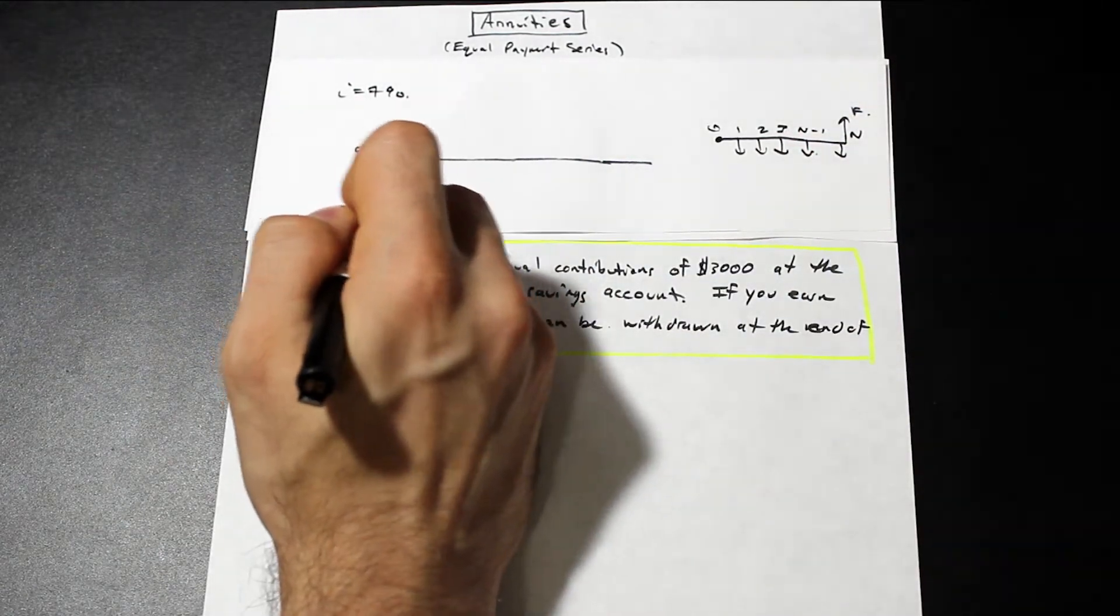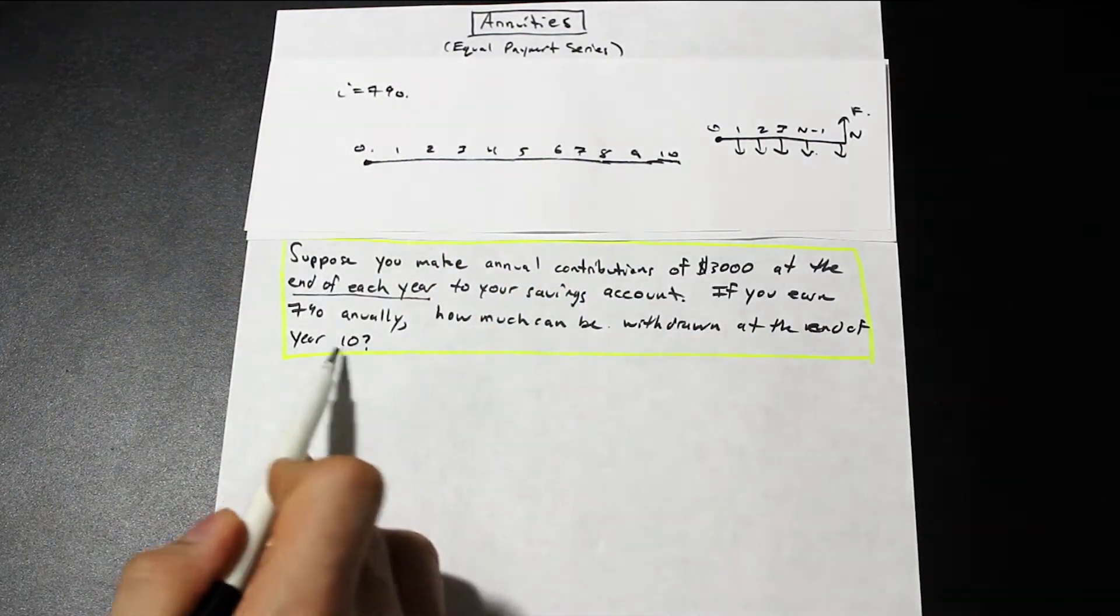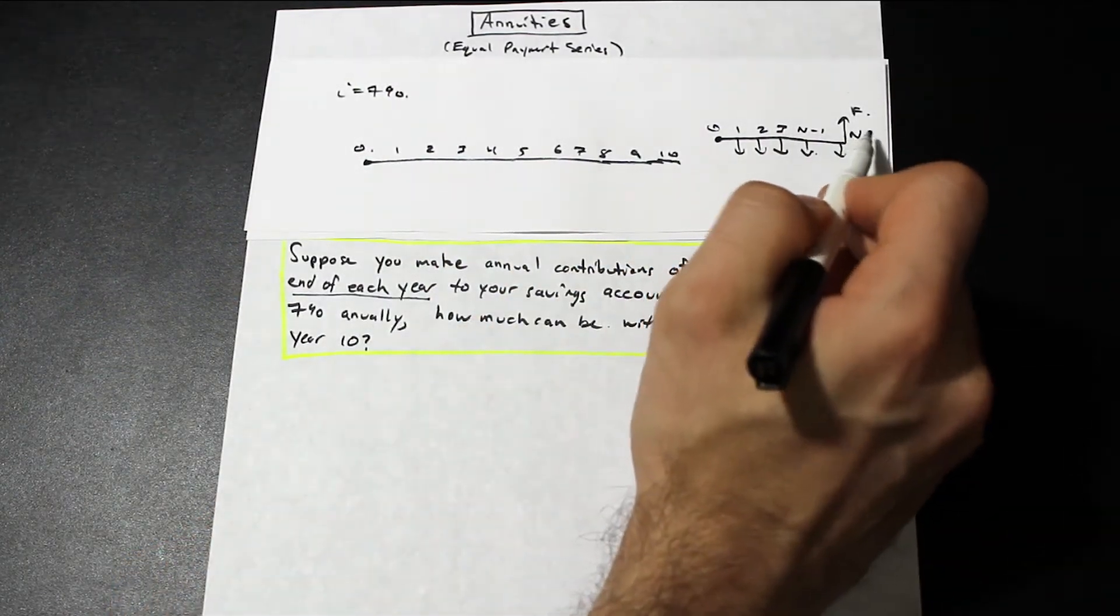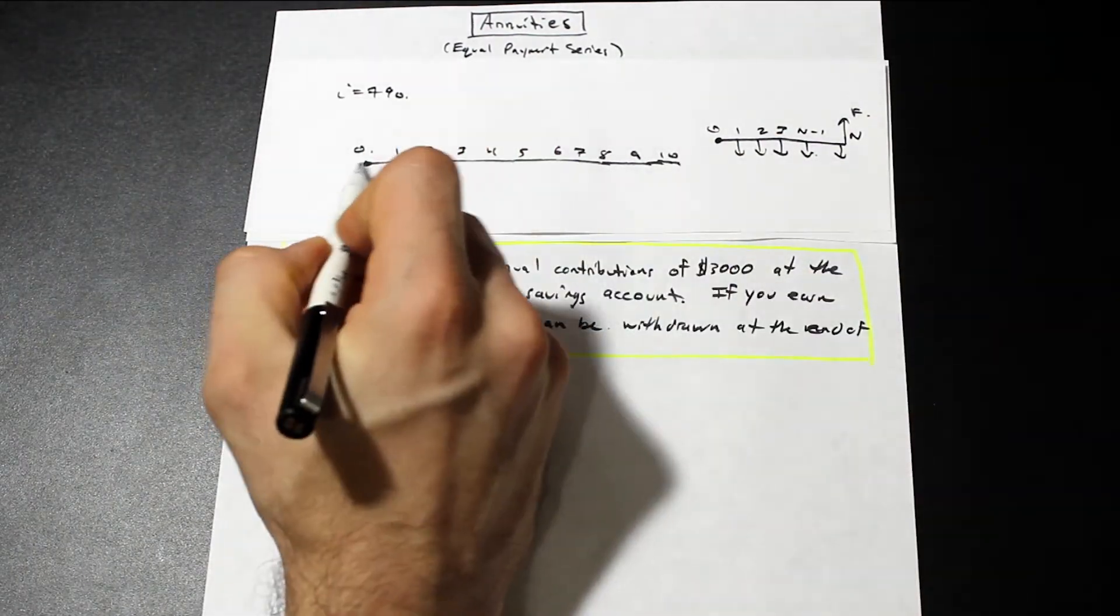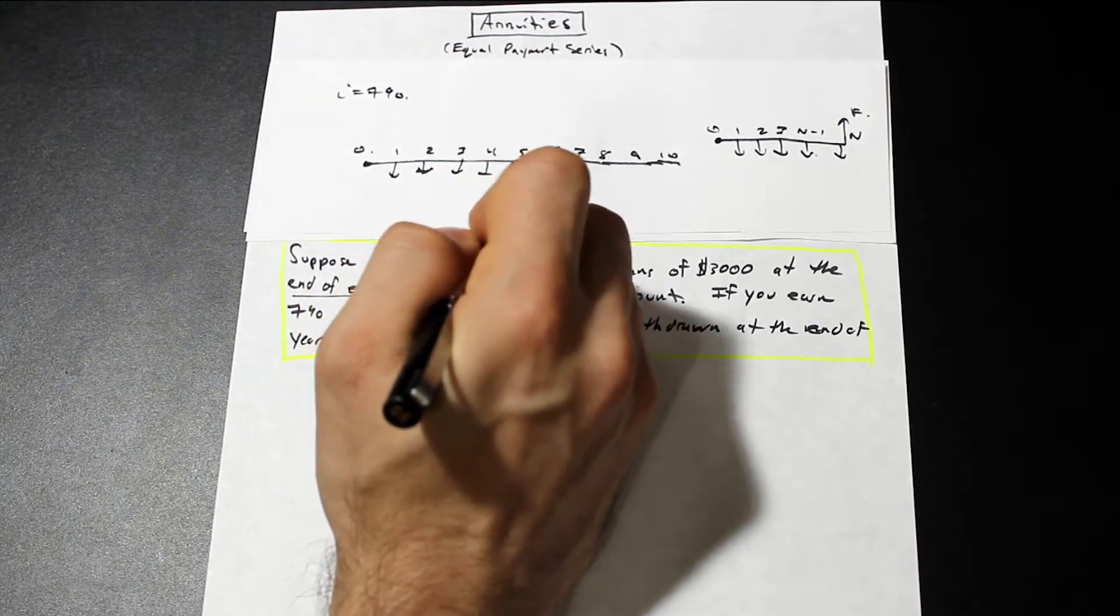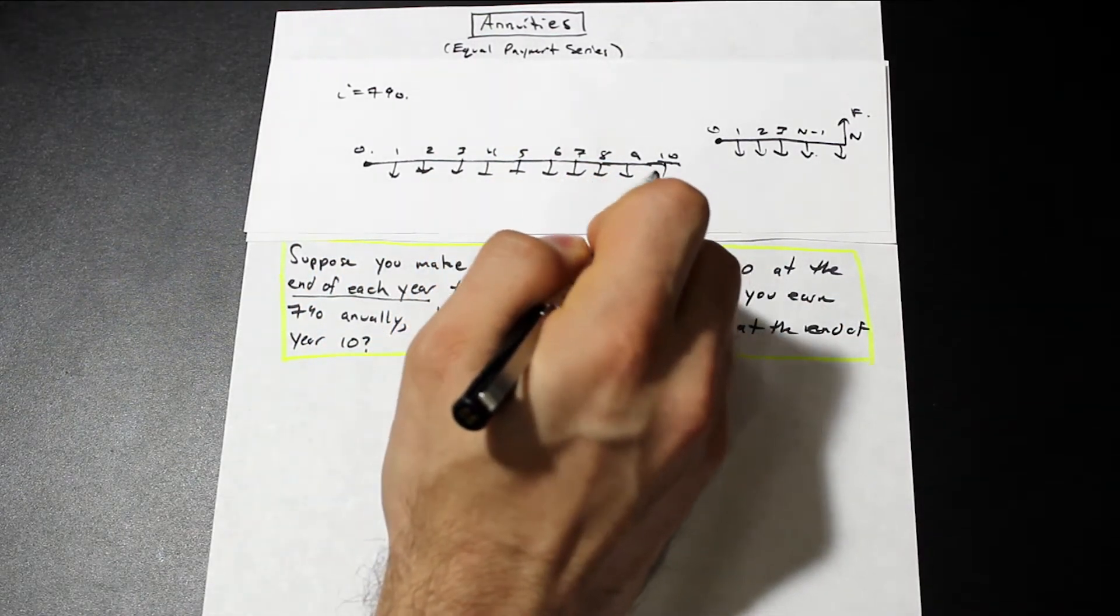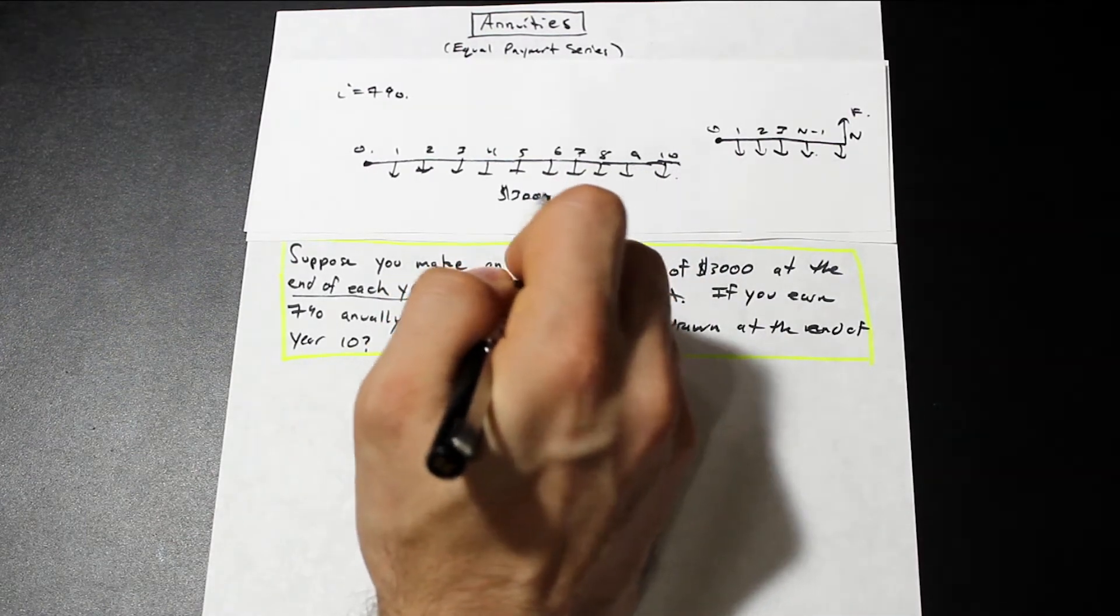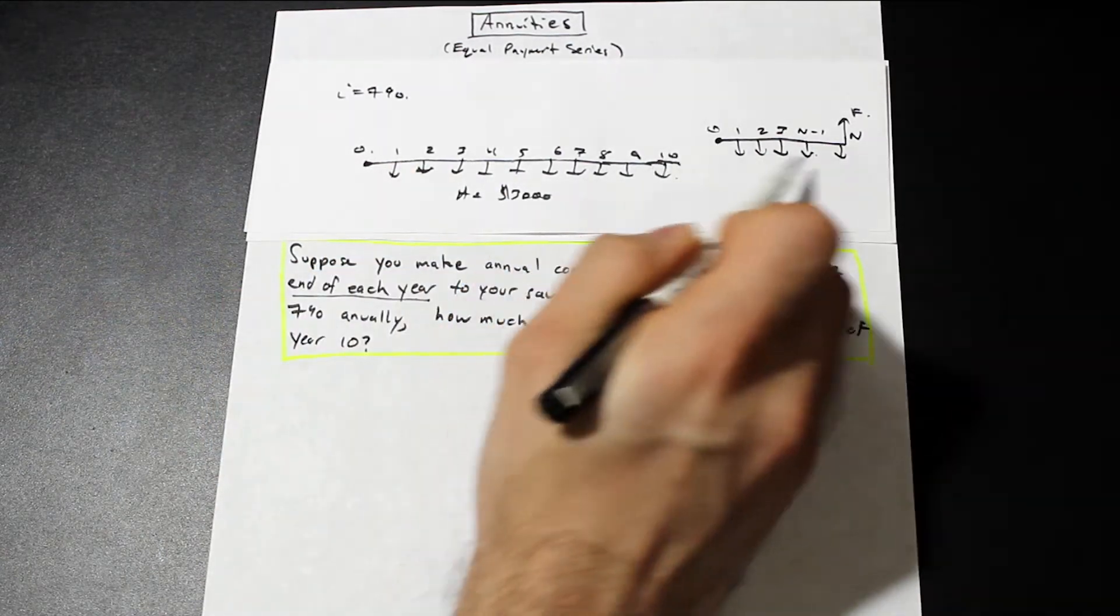So we have year 0, and where our n is 10, so we have 10 years, right, so n is here, n minus 1 would correspond to 9, so we start at 0, and at year 1, we start making our equal payments, and these are all $3,000, these are all $3,000, instead of writing it for each one, I'll just write it on the bottom, A equals $3,000.